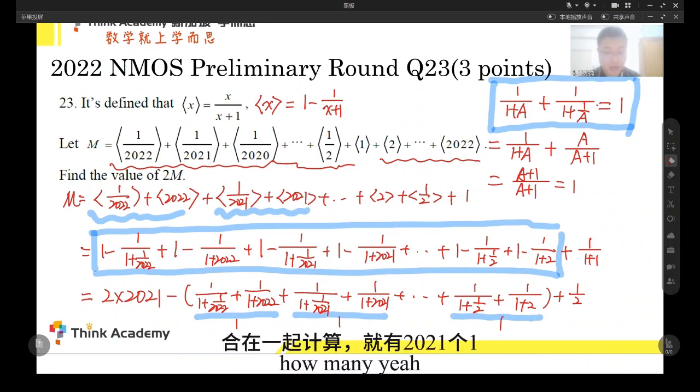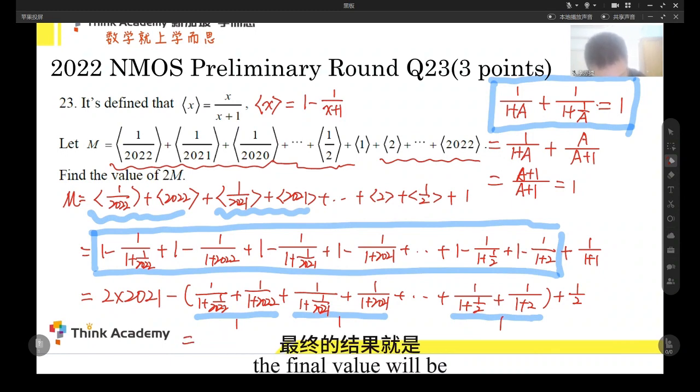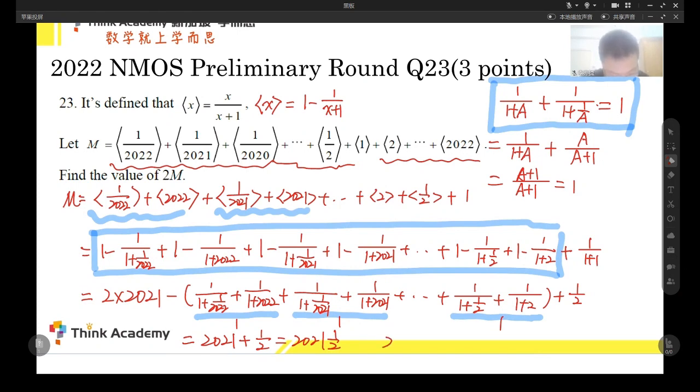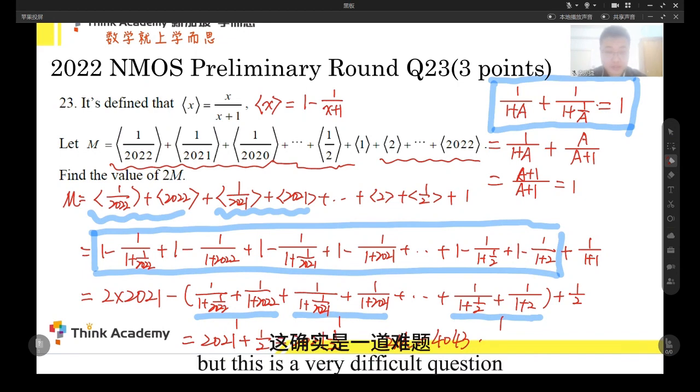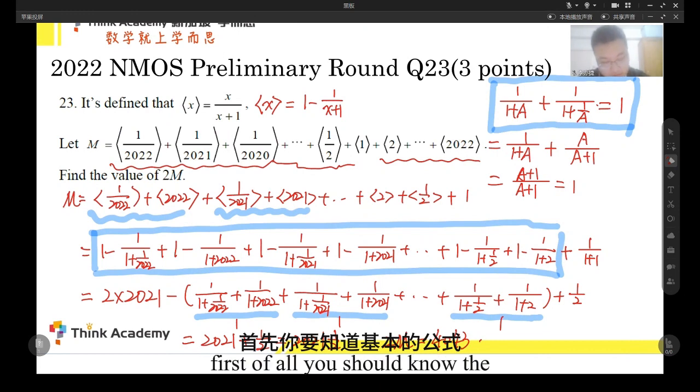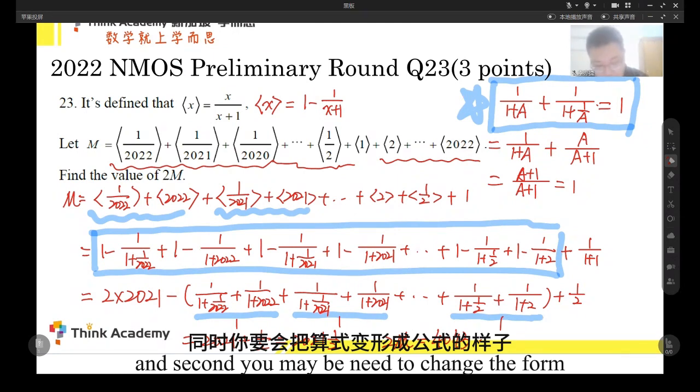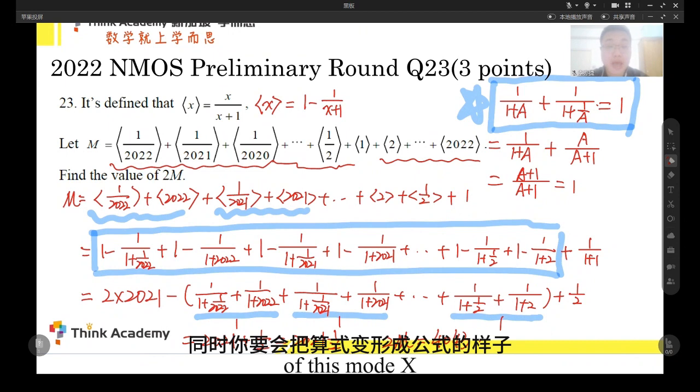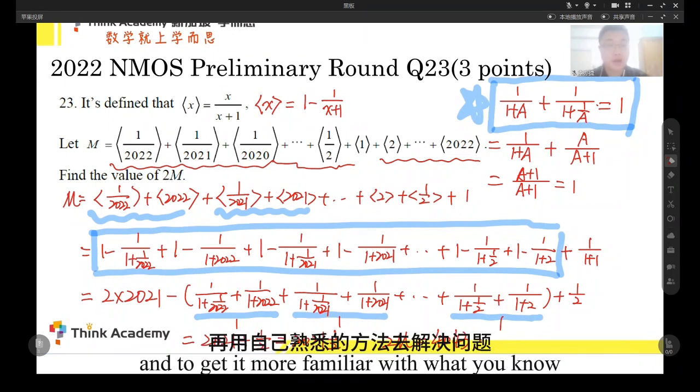So, the final value will be 2,021 plus the last 1, right? So, it will be like this. The question asks us for 2M, so it will equal to 4043. This is a very difficult question. First of all, you should know the important formula of complex fraction calculating. And second, you maybe need to change the form of this mode x to get it more familiar with what you know. So, that's all for today. See you tomorrow.